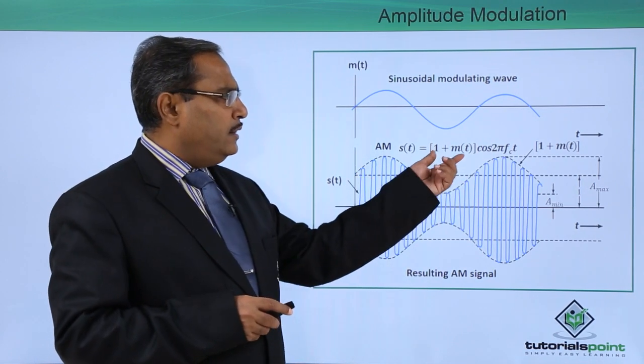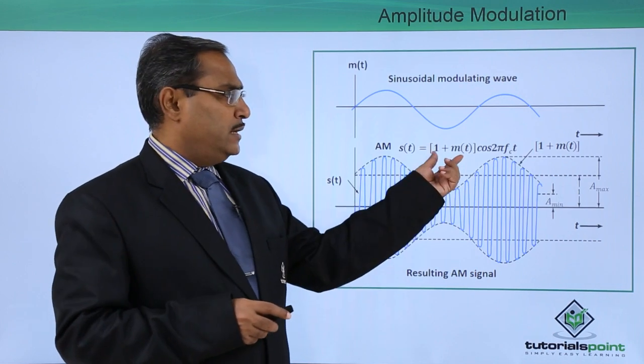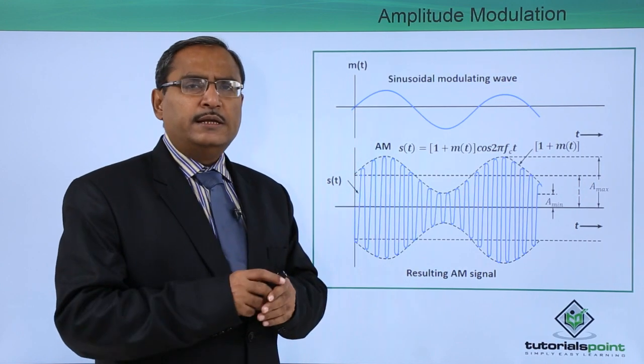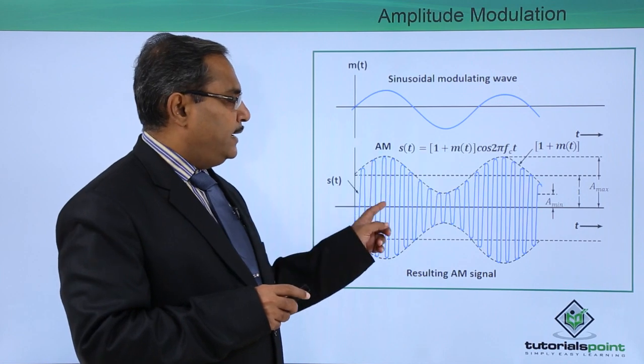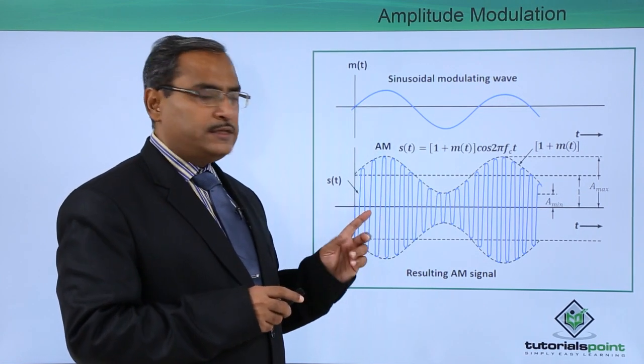Now the thing is that, let us suppose, just consider this one, the maximum amplitude of this m(t), that is this maximum amplitude, say let it be 0.6. Then what will happen? Here it is 0.6 and here it is 1. So what is the frequency? What is the amplitude there? 1.6.